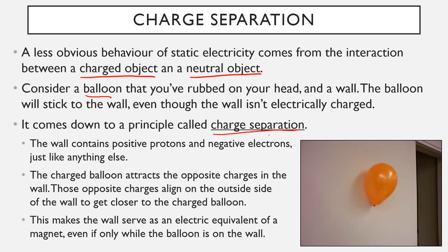Here's how charge separation works. The wall, like anything else, contains both positive protons and negative electrons in equal balance. Now, your charged balloon is going to attract the opposite charges in the wall. These charges, even though they're not going to leave the wall, are going to align in such a way that is conducive to having the balloon stick to the wall. Let's say the balloon was negatively charged — the negative balloon, as soon as it comes near the neutral wall, all of the positive pieces in the wall are attracted to it, while the negative pieces are repelled.